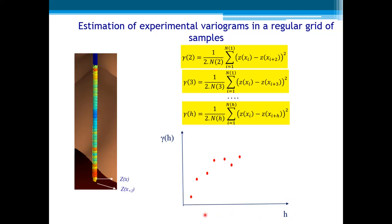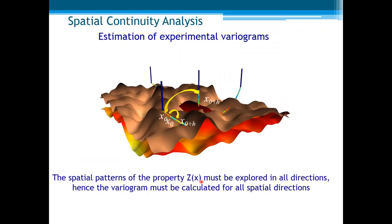The more correlated are the samples, the lowest is the variogram value. But the spatial patterns of the property z(x) must be explored in all directions. Hence, the variogram must be calculated for each individual spatial direction. But in this case, we have irregularly spaced data, as you can see. Let us see how to handle this case of irregular spaced data.